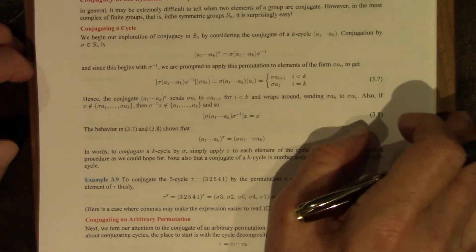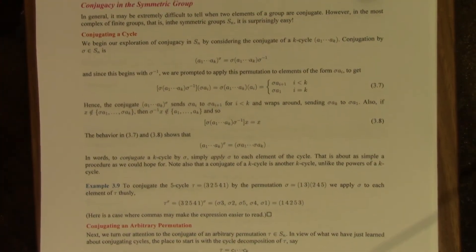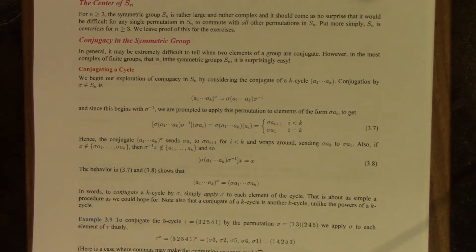You'll know if you studied linear algebra that it's not so easy to tell when two matrices are similar, or in other words, when they're conjugate. What's remarkable is that in the most complex of finite groups, the symmetric groups, it's quite easy to tell when two permutations are conjugate.